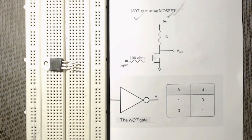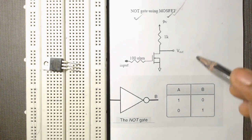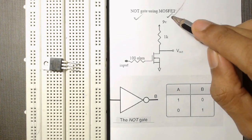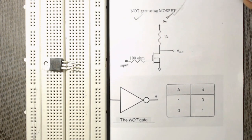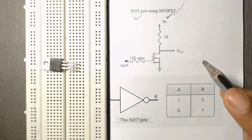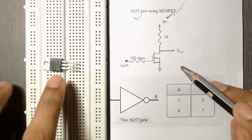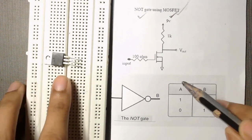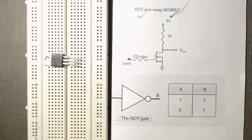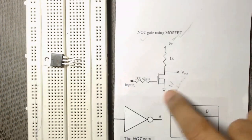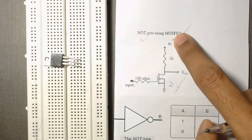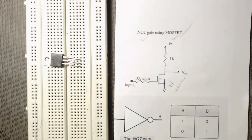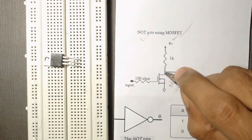Hello friends, in this video we will learn the working of a NOT gate using a MOS transistor or MOSFET, then we will implement it on a breadboard. Here is the circuit diagram of a NOT gate using MOSFET.